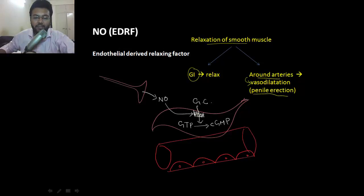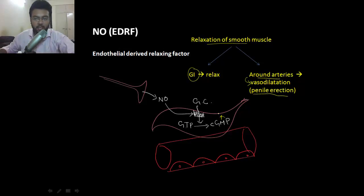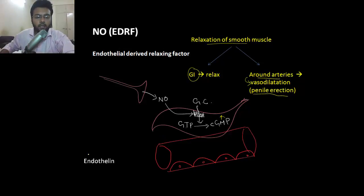Nitric oxide activates guanylyl cyclase, which converts GTP into cyclic GMP, which in turn relaxes the smooth muscle. Once the smooth muscles are relaxed, blood enters into the penis and it undergoes erection. Here is another group of compounds released by the endothelium itself, but in contrast to nitric oxide, it constricts the vessel — that is endothelin.